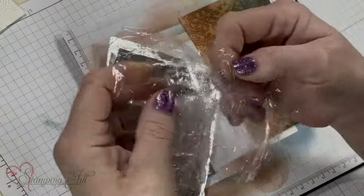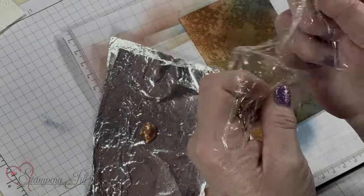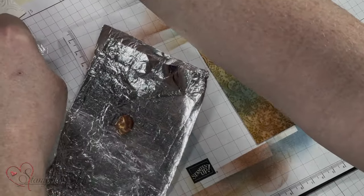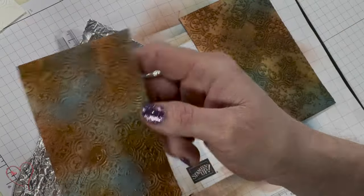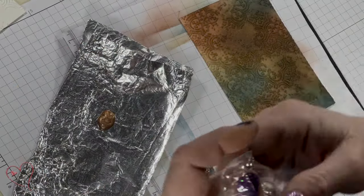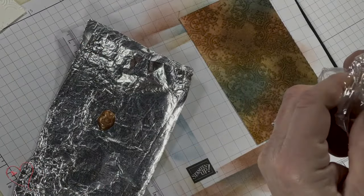You have a couple of ways you can apply this. The easiest way is to use saran wrap. You can use a sponge or different things. But what you're looking for is just a little bit of random color of the metallics. You don't want a lot. You don't want to paint it on. You just simply want to lightly dab it on.